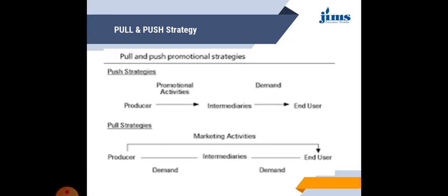On the contrary, when we talk about pull strategy, it is just the opposite. Here the end user is pulling the product from the manufacturer by creating more and more demand. The consumer is generating demand, telling the intermediaries or channels of distribution to bring more products in huge quantity — giving feedbacks, responding, and commenting on digital platforms. So here the consumer is trying to pull the product towards the market from the manufacturer's end. Push is when the manufacturer is trying to push, and pull is when the consumer is trying to pull the product.